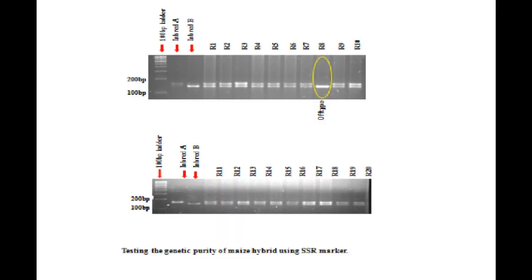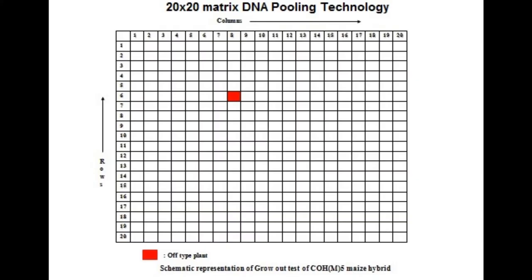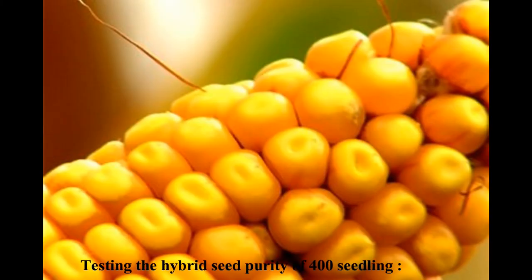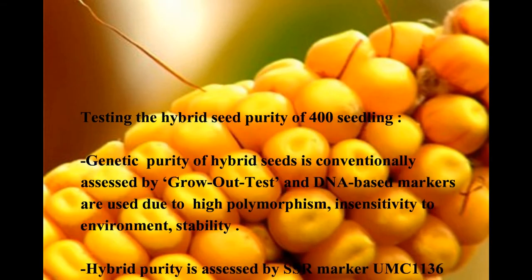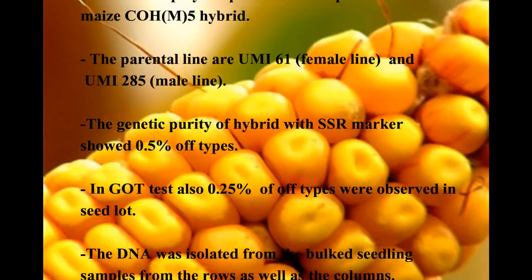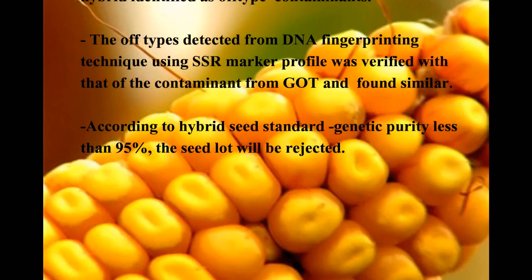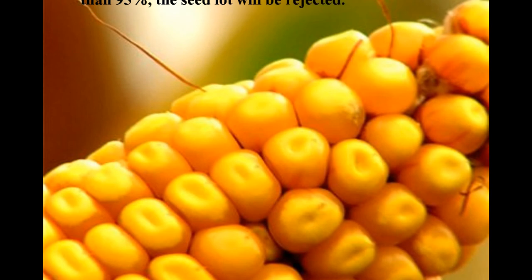SSR markers are effectively used for the detection of impurities in maize hybrids and their parental lines. For detection of impurities of the maize hybrid, DNA was isolated from the leaf bits of each column and row of the matrix, bulked, and a total of 40 DNA bulks representing 20 rows and 20 columns were prepared. The genetic purity with the SSR markers showed 0.5% off-types, and in the grow-out test, 0.25% off-types were observed in the seed lot. The off-types detected from DNA fingerprinting using SSR marker profiles were verified against contaminants from the grow-out test.